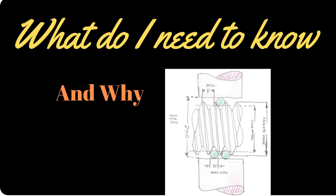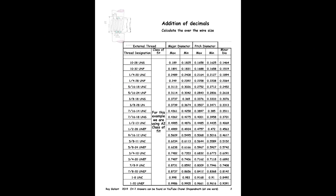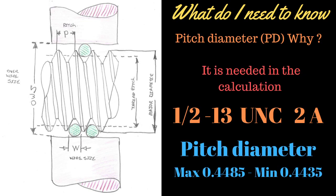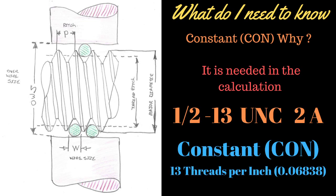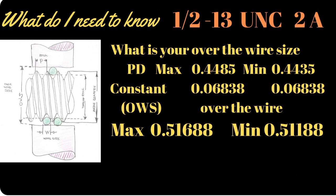The following charts are where you'll get the information to do your calculations to measure over your three wires. Major diameter — why do you need to know the major diameter? It's what you have to machine the outside of the part to. You must be within the maximum and minimum or your part will not be within tolerance. Pitch diameter is only needed in the calculations; we don't actually measure this. Your constant is a predetermined calculation — we don't actually measure this amount. Your wire size is the actual physical size of wire that you'll be using to do your measurement.